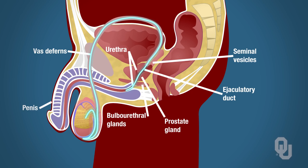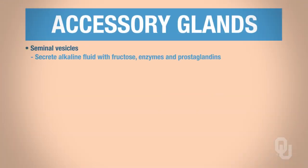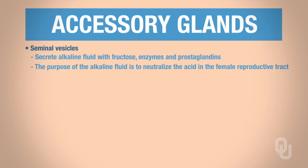Let's look more closely at the accessory glands. The seminal vesicles secrete an alkaline fluid that contains fructose, enzymes, and prostaglandins. Alkaline fluids are basic, and the purpose of this fluid is to neutralize the acid in the female reproductive tract. The fructose is used for energy, since sperm need energy for motility. The enzymes facilitate semen clotting, and the prostaglandins support motility and viability of the sperm.